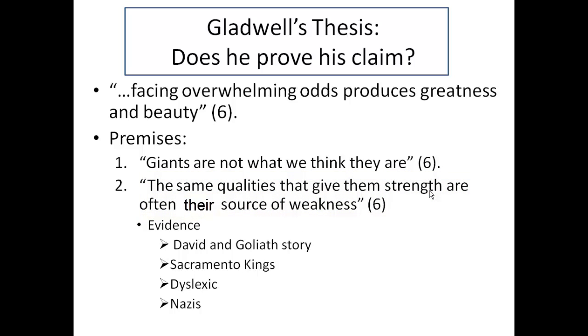The evidence he uses to prove this includes the David and Goliath story, as well as contemporary examples like the Sacramento Kings, dyslexia, and the Nazis.